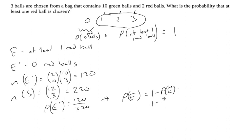Which is 1 minus 120 out of 220, which is 100, not 1,100, just 100 out of 220.